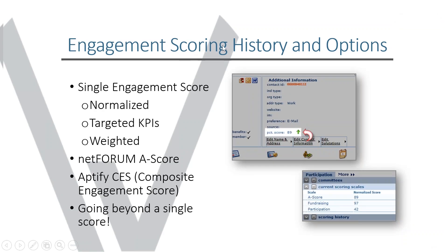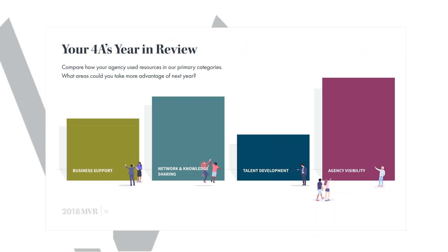There are features available in many AMSs that you can use to track member engagement. The 4As looked at a number of engagement scoring products on the market. But what they needed was custom. Engagement scores can be helpful for staff to have a single number — a descriptive way to look at a point in time and see where an agency is relative to peers. But there are other aspects of engagement that aren't communicated through a single score.